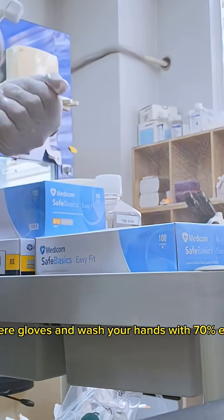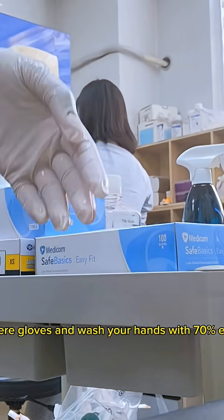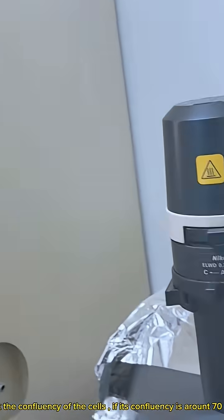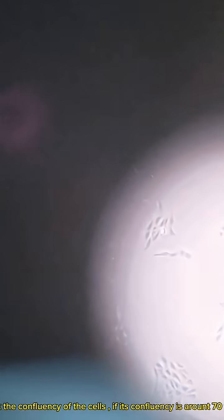First, wear gloves and wash your hands with 70% ethanol. Take out your cells from the CO2 incubator and check the confluency. If the confluency is around 70-80%, you can store them in cryo vials for future use.